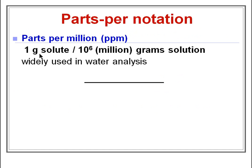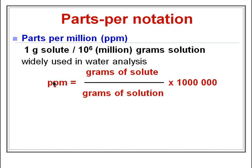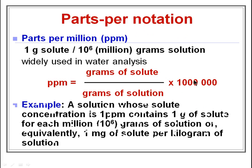This is a very small amount of solute, and this unit is widely used in water analysis. The formula for ppm is: 1 ppm equals the number of grams of solute divided by the number of grams of solution, multiplied by 1 million, which is 10 to the power of 6. For example, a solution with a solute concentration of 1 ppm contains 1 gram of solute for each 10 to the power of 6 grams of solution — a very dilute solution.